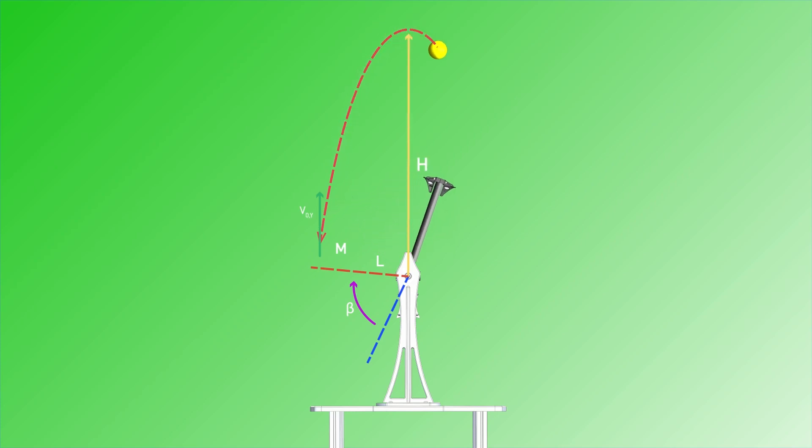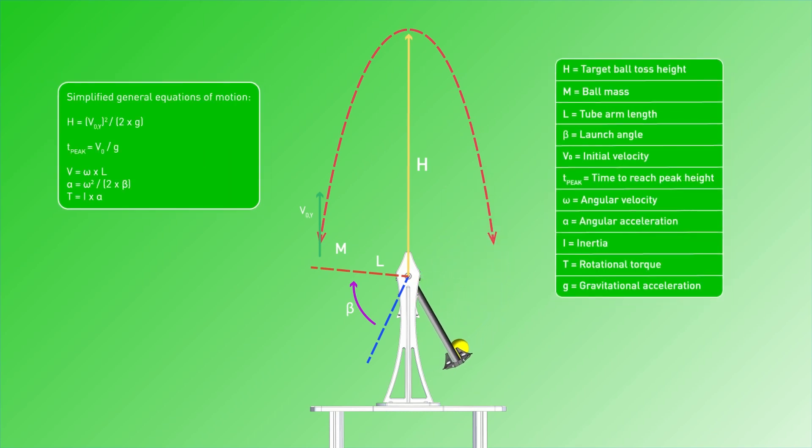Combining that simple design performance target with the physical parameters of the system as shown here, we can use general equations of motion for rotational bodies and ballistic flight trajectories to derive the motor performance requirements. For simplicity in our calculations, we will neglect the effects of air resistance and assume the system consists only of rigid bodies. With this method, we are able to calculate the required rotational velocity and torque needed to achieve the desired flight path.